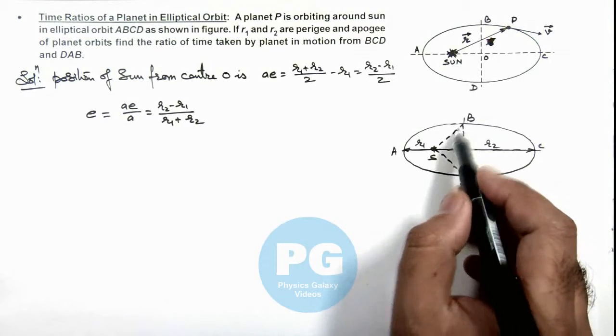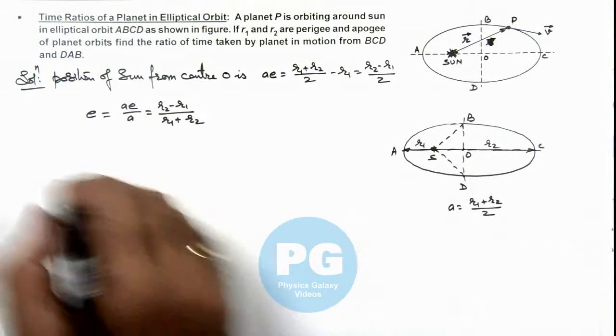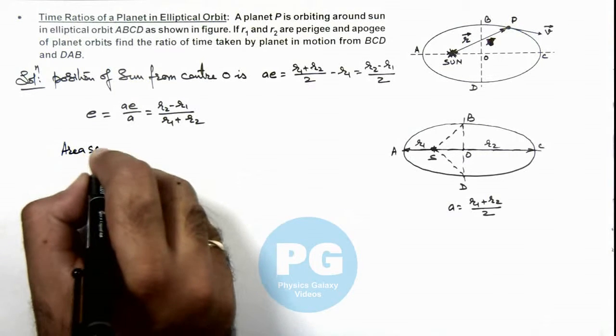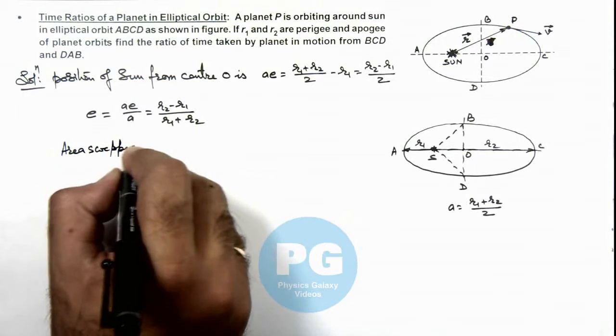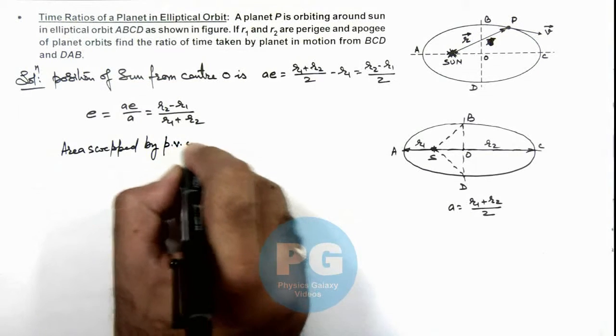So we can calculate this area and this remaining area. So here we can calculate area swept by position vector of planet.